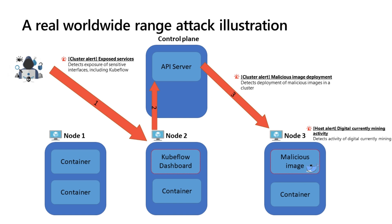An attacker can access the Kubeflow dashboard and then take control of the API server. It creates new malicious images that, for example, perform mining activity — acting as a mining operation creating bitcoins for the malicious user.